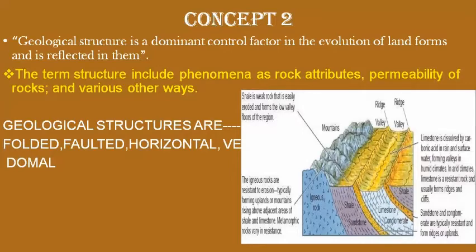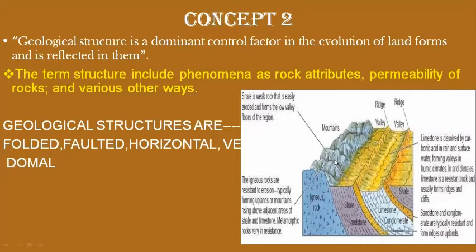Rocks differ from one another in their physical and chemical attributes because they are formed of minerals with different characteristics. For example, shale is a weak rock, so it has formed low valleys and been more eroded. Igneous rocks are pretty hard and resistant to erosion, so they have become mountains rising above the shale. Limestone's chemical composition causes it to erode easily in rainwater forming carbonic acid.